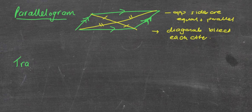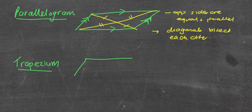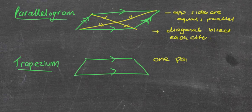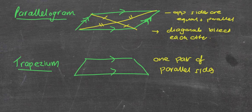We've got the trapezium, which is a nice easy one. It has simply one property: one pair of parallel sides. Just one pair of parallel sides — it doesn't matter which opposite sides, but one pair of opposite sides are parallel.